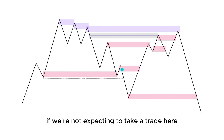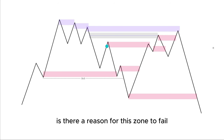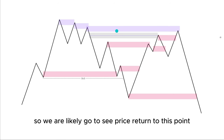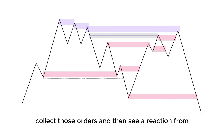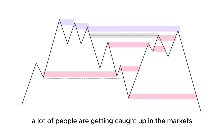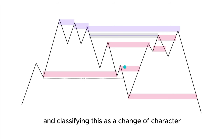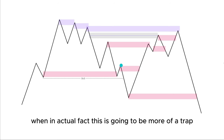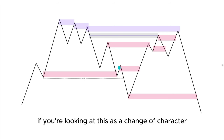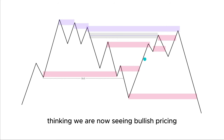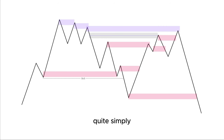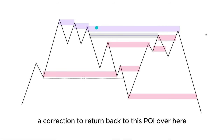If we look at this zone here, is there a reason for this zone to fail? Quite simply, there is — we have a fair value gap and an unmitigated order block. So we are likely going to see price return to this point, collect those orders, and then see a reaction. Another way traders get caught up is when they see a break of structure, they are not looking at the overall trend and they classify this high being broken as a change of character, when in actual fact this is more of a trap — all we're really seeing is a correction back to the POI.